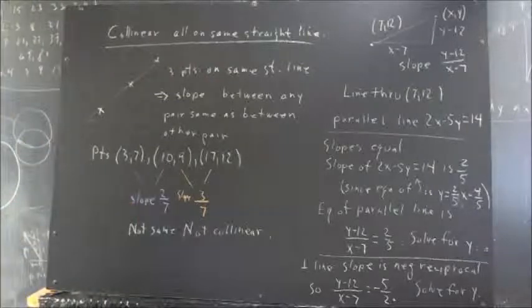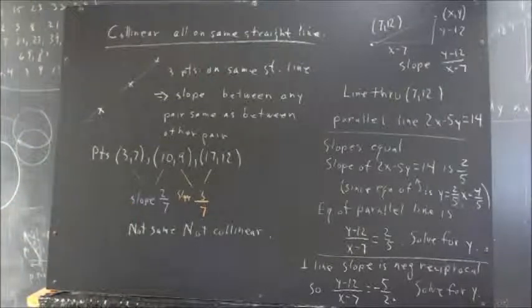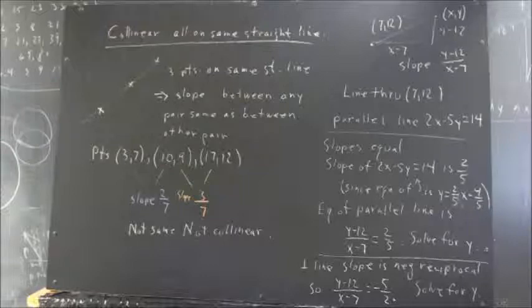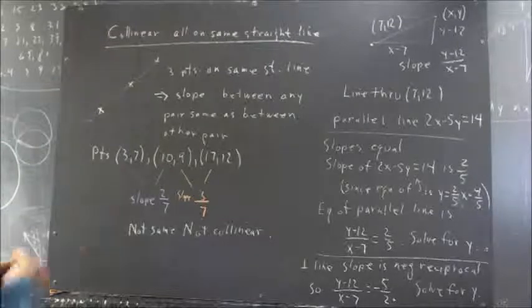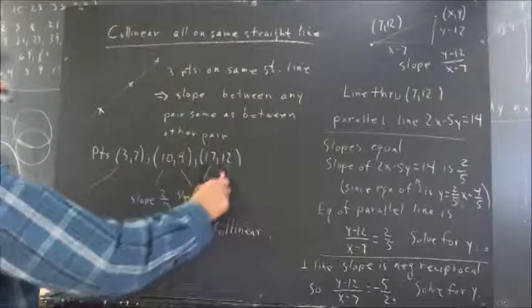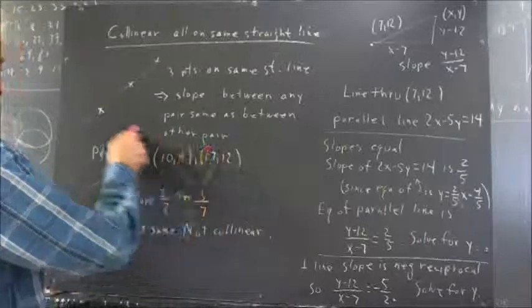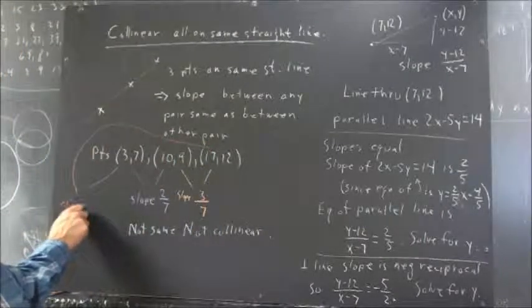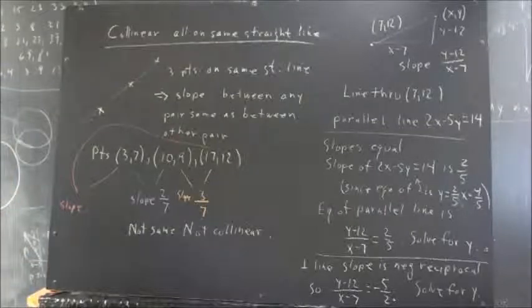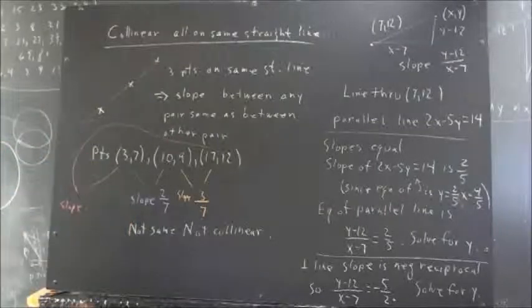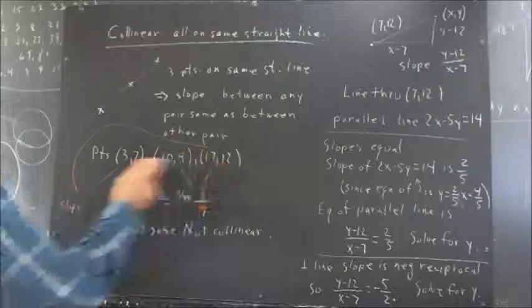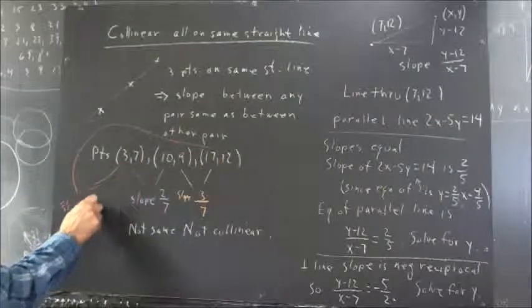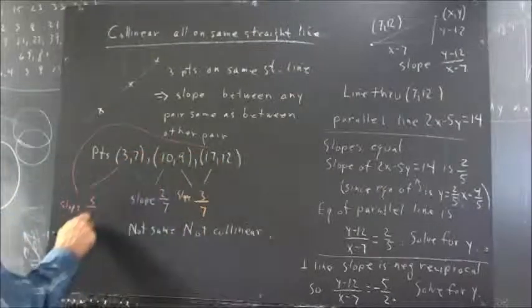They do not lie on a straight line. And I could as well have calculated the slope between the first and the last points just to double check myself. Okay, a little extra checking doesn't hurt. The slope here, well, 12 minus 7 is 5. 17 minus 3 is 14.